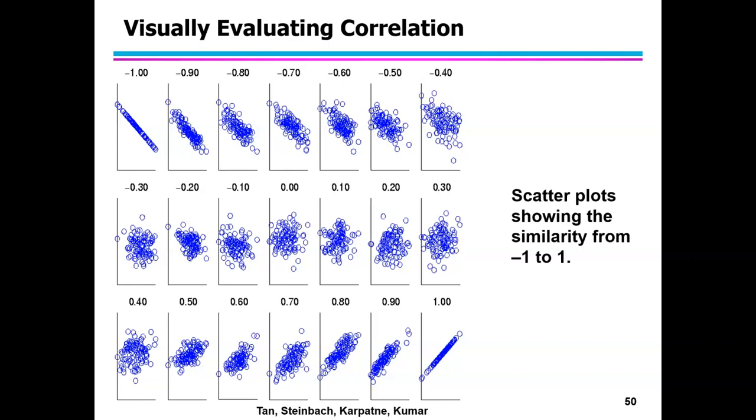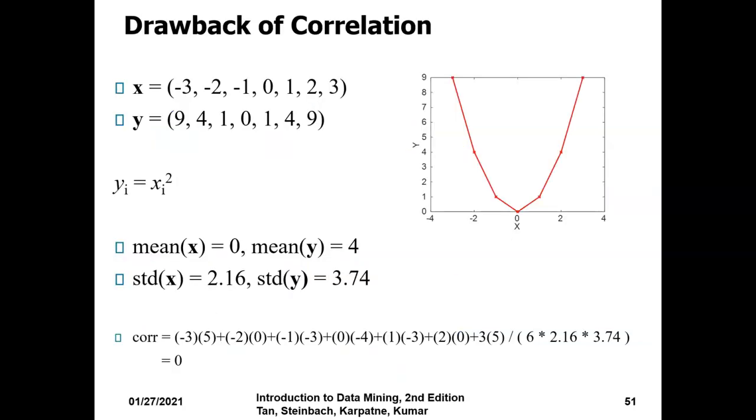If you look at minus 1, it is skewed to the left. If you look at 1, it is just like a linear. Similarly, you can see if you look at zero, there is no similarity—it's ambiguous. Drawbacks of correlation: it doesn't fit, so we need some standard deviations or some other ways to find the best way to find the correlation.